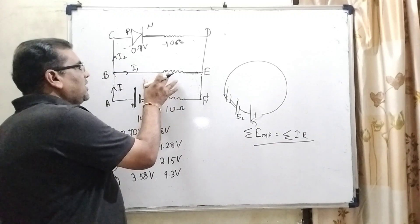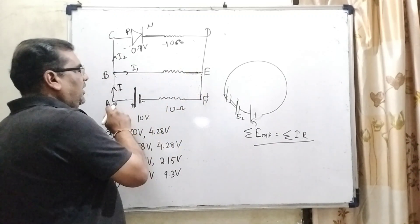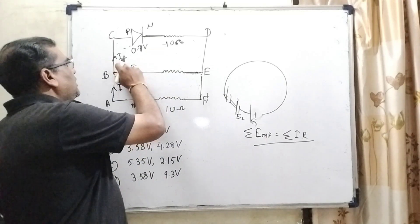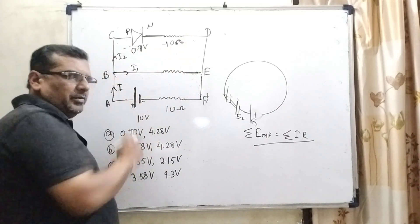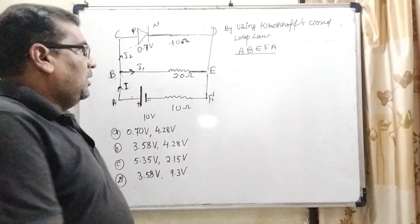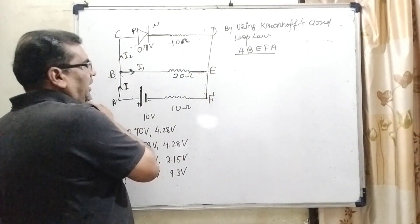So here we are using Kirchhoff's closed circuit law in the loop of A, B, E, F, A and we will use Kirchhoff's law a second time for B, C, D, E, B. Now, here we have taken this closed loop A, B, E, F, A.